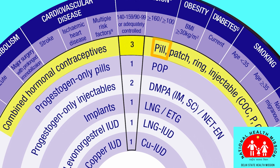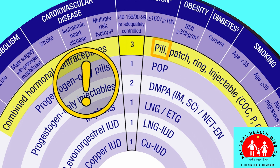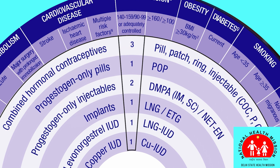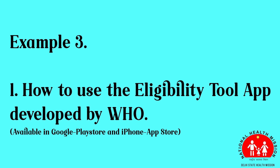The number 3 indicates that the pill is not safe for her. The other methods with a 1 or 2 are safe. You can counsel her on the alternative methods.